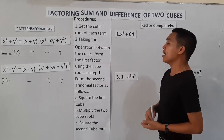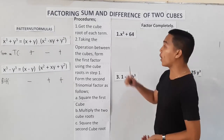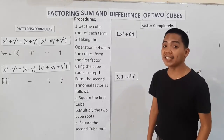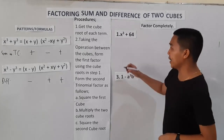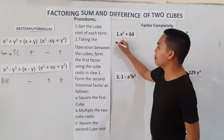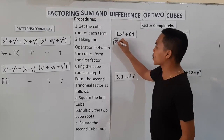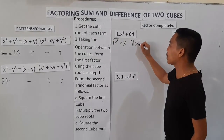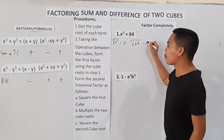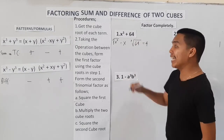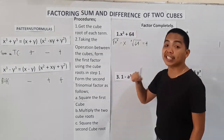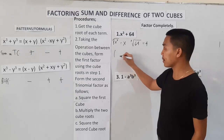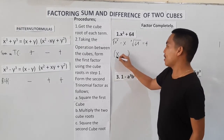Number one: Factor x³ plus 64. Is the given a sum of two cubes or difference of two cubes? The answer is sum of two cubes. Step one: get the cube root of each term. The cube root of x³ is x. The cube root of 64 is 4. Taking the operation between the cubes — the operation is sum — we form the first factor, which is a binomial. Copy the operation, which is plus.